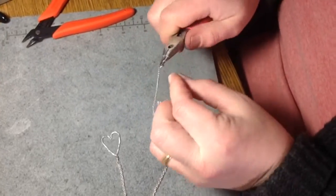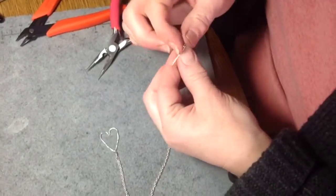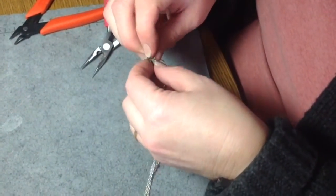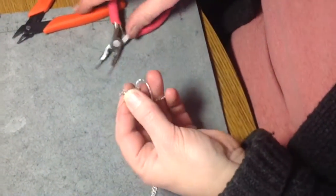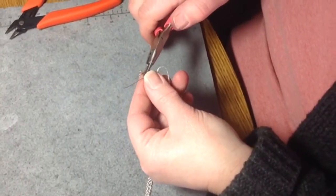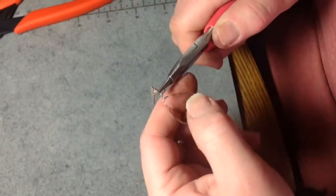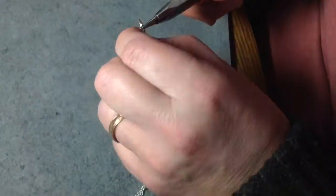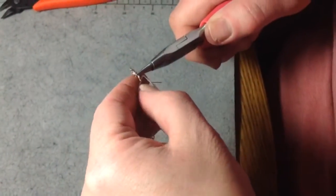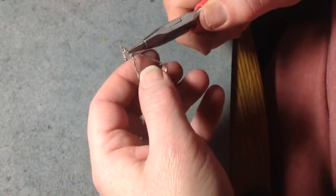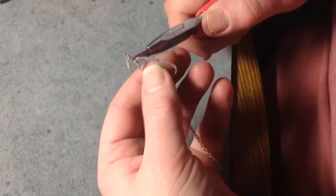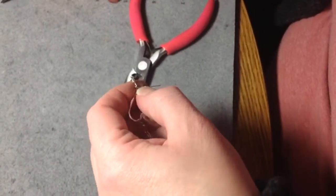I put my next bead on, and then just do another wrap loop on the other side. Catch it up in the top of the heart, secure it, and if you notice it's already starting to move a little bit around, that's okay. Like I said, if I make sure that it's tight, I trim that back.